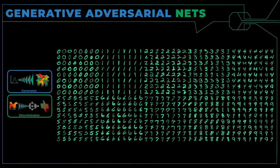Das ist natürlich ein Beispiel, wo es funktioniert. Es hängt sehr viel davon ab, was für einen Datensatz man hat und wie man das trainiert. Aber wenn es funktioniert, kann man Zeichen, 3D-Objekte, Bilder von Tieren erzeugen — was auch immer ihr wollt.